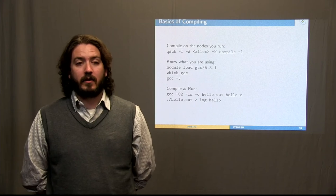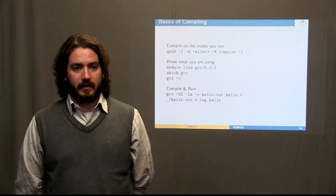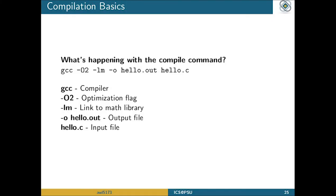The next step is to compile your own code and run it. Our example compilation command is: 'gcc -O2 -lm -o hello.out hello.c'. A few things are happening here: 'gcc' is the compiler; '-O2' is an optimization flag; '-lm' links to the math library (with GCC the math library is named 'm' rather than 'math'); '-o hello.out' specifies the output file name (by default compilers write 'a.out'); and 'hello.c' is the input file.